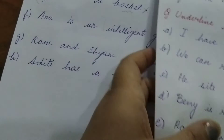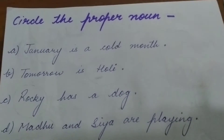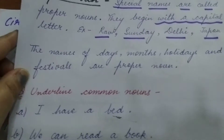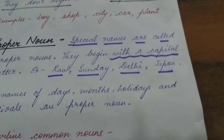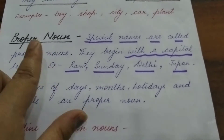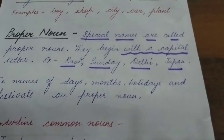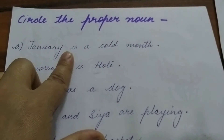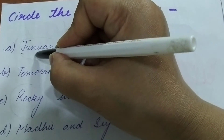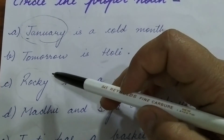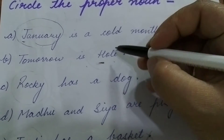There are some more questions based on proper noun. We have learnt that proper nouns are the special names. One more thing — names of days (Sunday, Monday, Tuesday, Wednesday, Thursday), all seven days, months from January to December, holidays and festivals are proper nouns. And proper nouns begin with a capital letter. 'January is a cold month.' January is the name of a month and begins with a capital letter — so yes, it is proper noun. 'Tomorrow is Holi.' Holi is a festival and the word Holi begins with a capital letter, so it is also a proper noun.